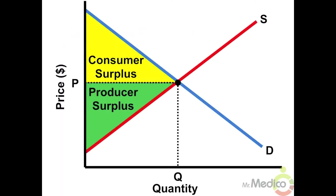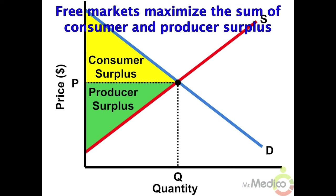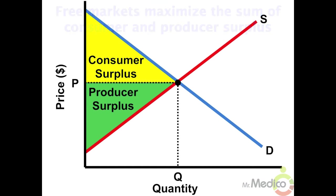Number three: how do you identify the area of consumer and producer surplus in a market? When a market is in equilibrium, the sum of consumer and producer surplus is maximized. A consumer surplus exists when the market price a consumer pays is less than what he or she is willing to pay — for example, willing to pay $15 for a movie ticket but the market price is $10 gives a consumer surplus of $5. In a supply and demand graph, consumer surplus is above the equilibrium price and under the demand curve. A producer surplus exists when the market price is greater than what the producer is willing to sell for — this is the area under the equilibrium price and above the supply curve.